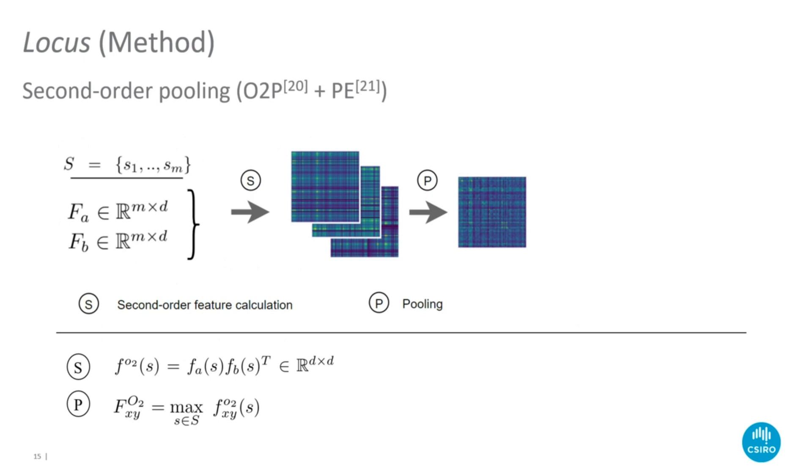Given a set of segments and the two sets of complementary features, the scene level representation is obtained using second-order pooling. For each segment, its second-order feature is obtained using the outer products of its associated FA and FB features. The second-order features of all segments are then aggregated using element-wise max pooling to obtain a fixed-size representation which is invariant to the number and order of segments.